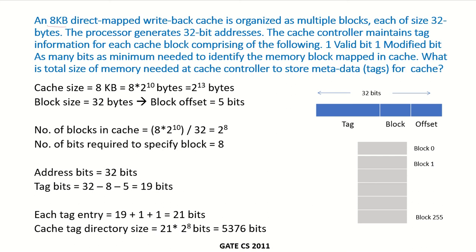An 8KB direct-mapped write-back cache is organized as multiple blocks, each of size 32 bytes. The total size of this cache is 8 kilobytes. Converting that into bytes, since K is 2 to the power of 10, we get a total of 2 to the power of 13 bytes. The blocks are each of size 32 bytes.